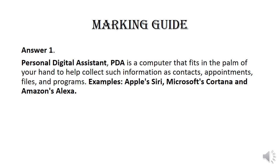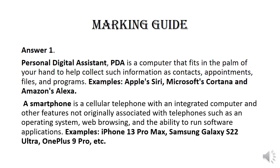A PDA helps collect information such as contacts, appointments, files, and programs. Examples are Cortana and Amazon's Alexa. A smartphone is a mobile telephone with integrated computer and other features not ordinarily associated with telephones.